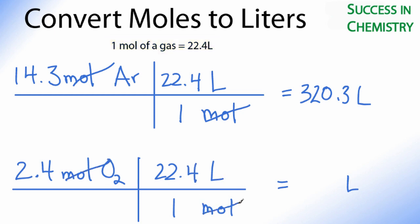So we can cancel out the moles, and we'll have 2.4 times 22.4 liters, and that'll give us 53.8 liters.